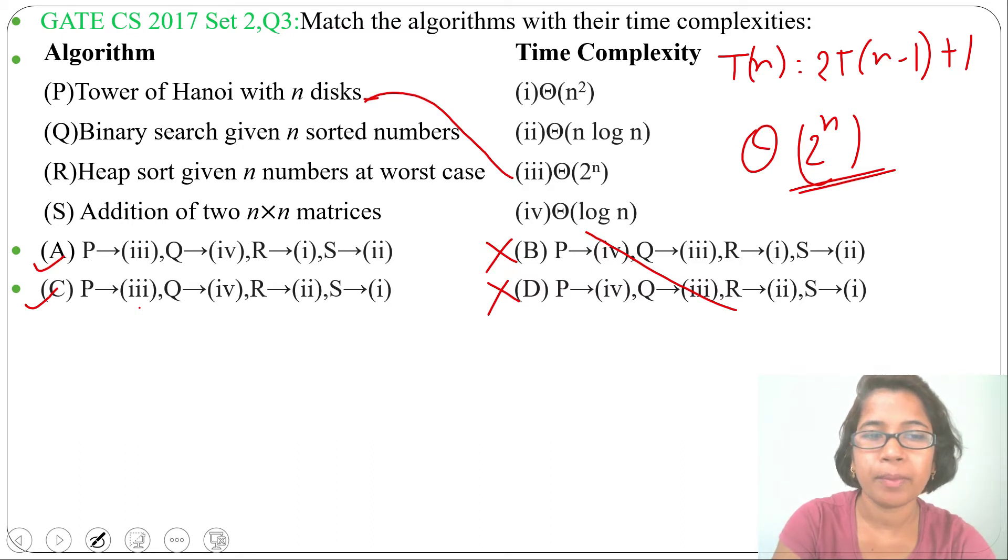Next, Q: Binary search given n sorted numbers. N sorted numbers are given and you need to do binary search. For sequential search, running time is Θ(n), while for binary search, running time is Θ(log n). Check if Θ(log n) is present. Yes, it is present. So Q will be related with 4. Q is related with 4 in both remaining options.